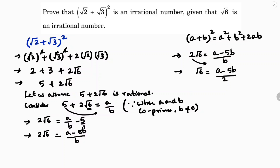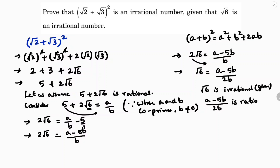Transposing the 2, we get √6 = (a − 5b)/(2b). Now, since a and b are co-primes, the expression (a − 5b)/(2b) is clearly a rational number.